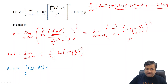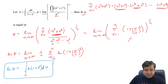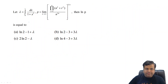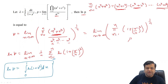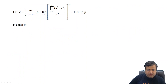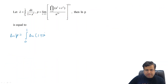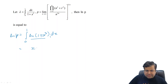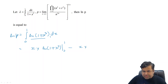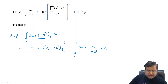Now we solve ln p, which equals the integral from 0 to 1 of ln(1 + x³) dx. We use integration by parts, taking the first function as ln(1 + x³) and the second function as 1, so its integral is x. The derivative of ln(1 + x³) is 1/(1 + x³) times 3x². Applying integration by parts, the expression becomes x·ln(1 + x³) evaluated from 0 to 1, minus the integral from 0 to 1 of 3x³/(1 + x³) dx.